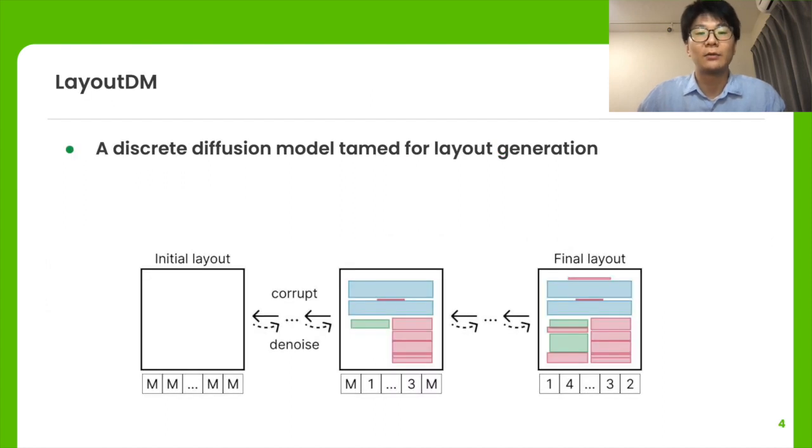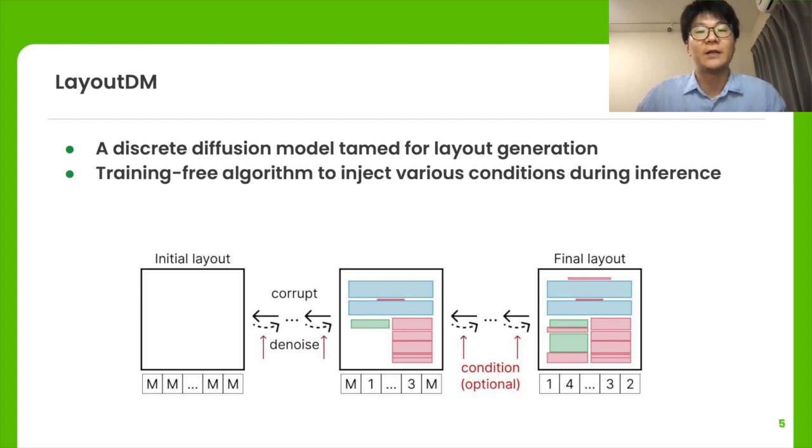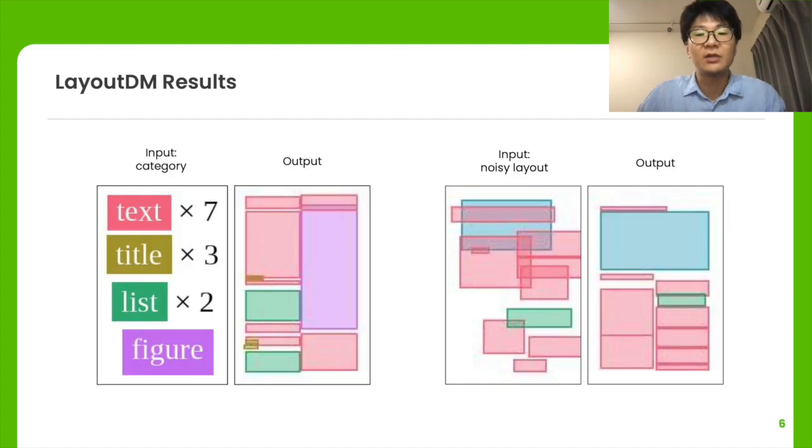Our model, LayoutDM, is built on discrete state space diffusion models and learns to infer a noiseless layout from the initial input progressively. During inference, we propose to inject user-provided conditions to enable controllable layout generation. We experimentally show that LayoutDM successfully generates high-quality layouts in various controllable layout generation tasks.